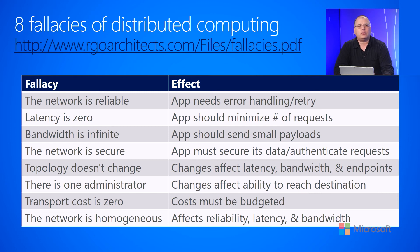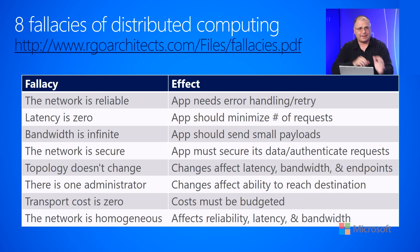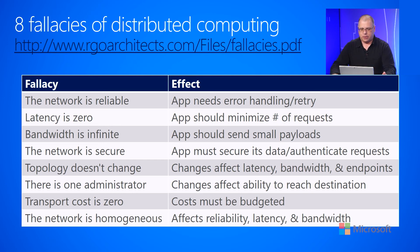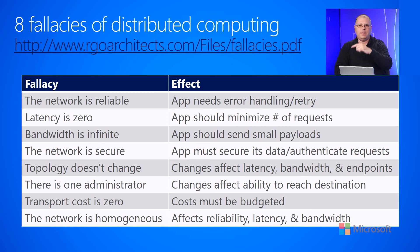Another fallacy is that there is one administrator — meaning only one person is in control. But really, in an orchestrator world, you have this other administrator, which is the orchestrator, acting on your behalf. And then you could have multiple people trying to configure the orchestrator. This really means that changes affect the ability to reach the destination. You might think you know a service's IP address and port, but maybe some administrator made a change somewhere, and now that is no longer true. You would like to be resilient against that kind of thing.